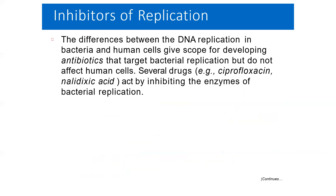The differences between DNA replication in bacteria and human cells give scope for developing antibiotics that target bacterial replication but do not affect human cells. Several drugs like ciprofloxacin and nalidixic acid act by inhibiting enzymes of bacterial replication. For example, nalidixic acid inhibits bacterial DNA gyrase. Most of these antibiotics disorganize the DNA strands and interfere with their template function.